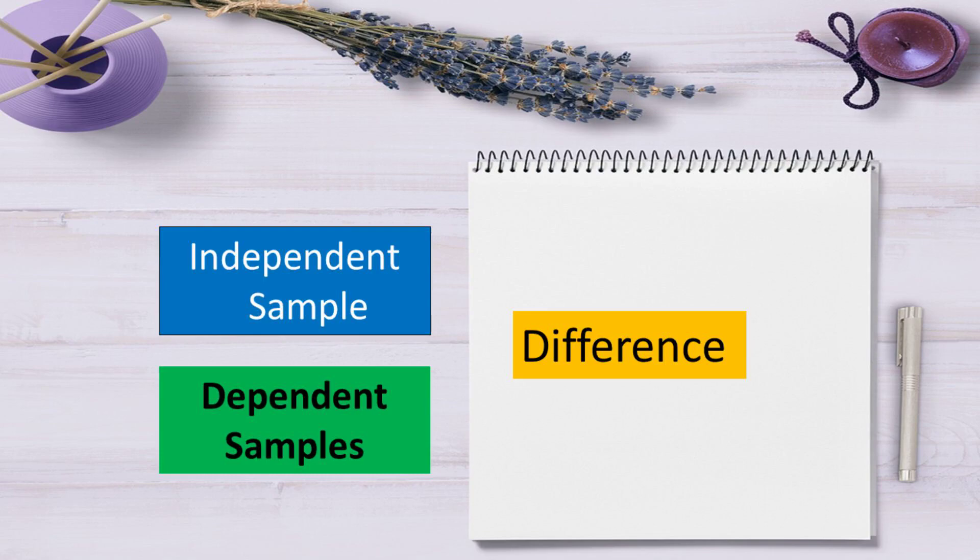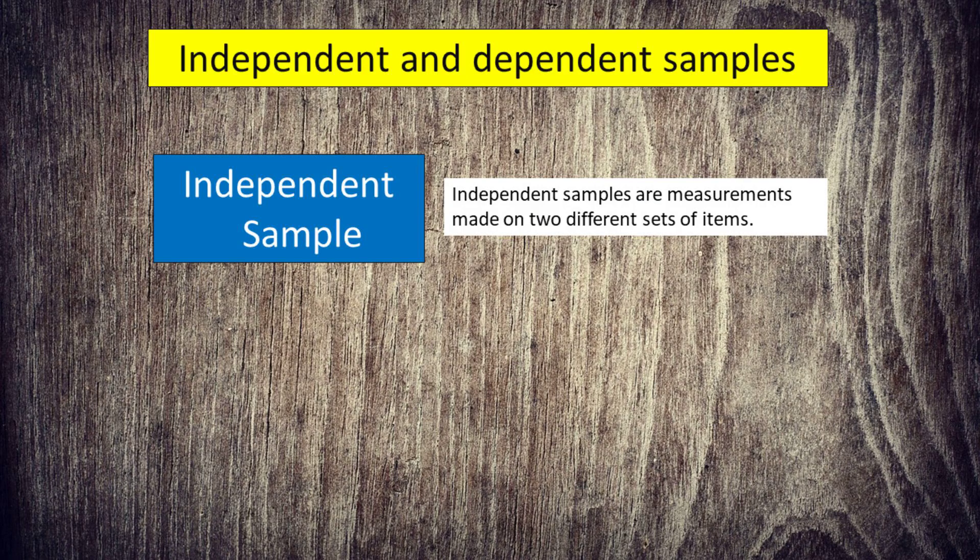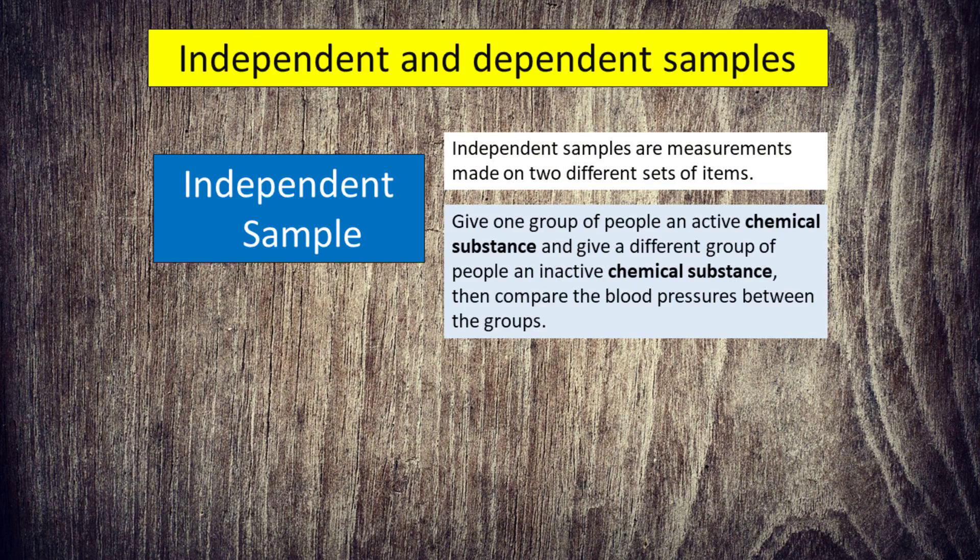What is the difference between independent and dependent samples? Independent samples are measurements made on two different sets of items. For example, give one group of people an active chemical substance and give a different group of people an inactive chemical substance.